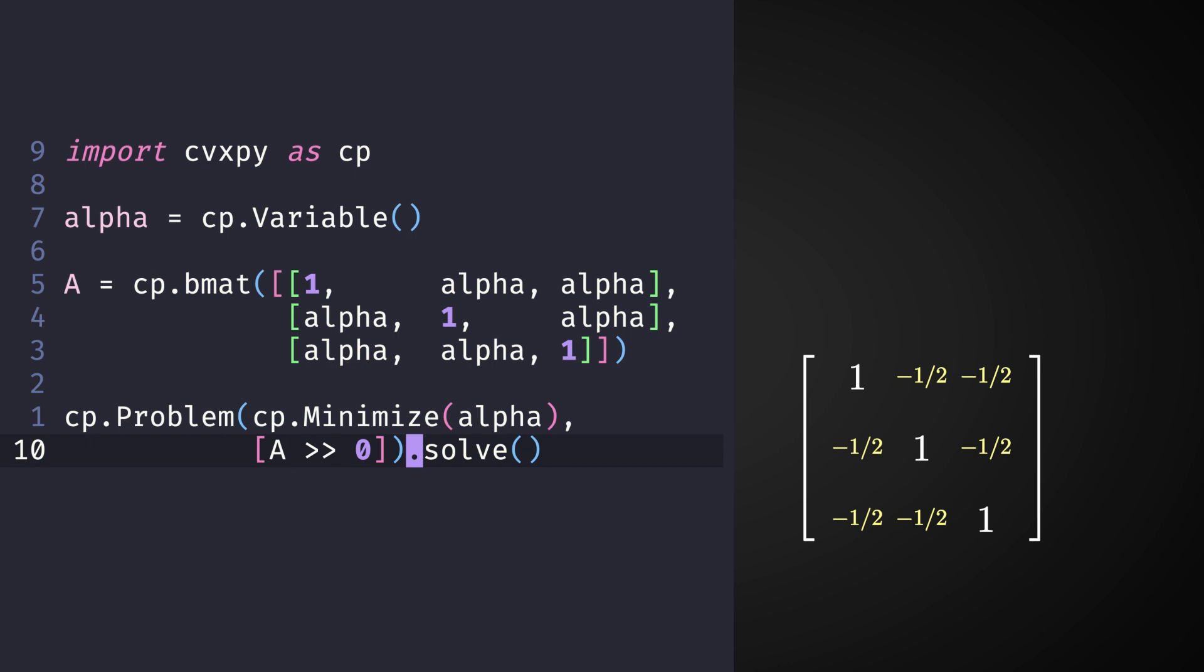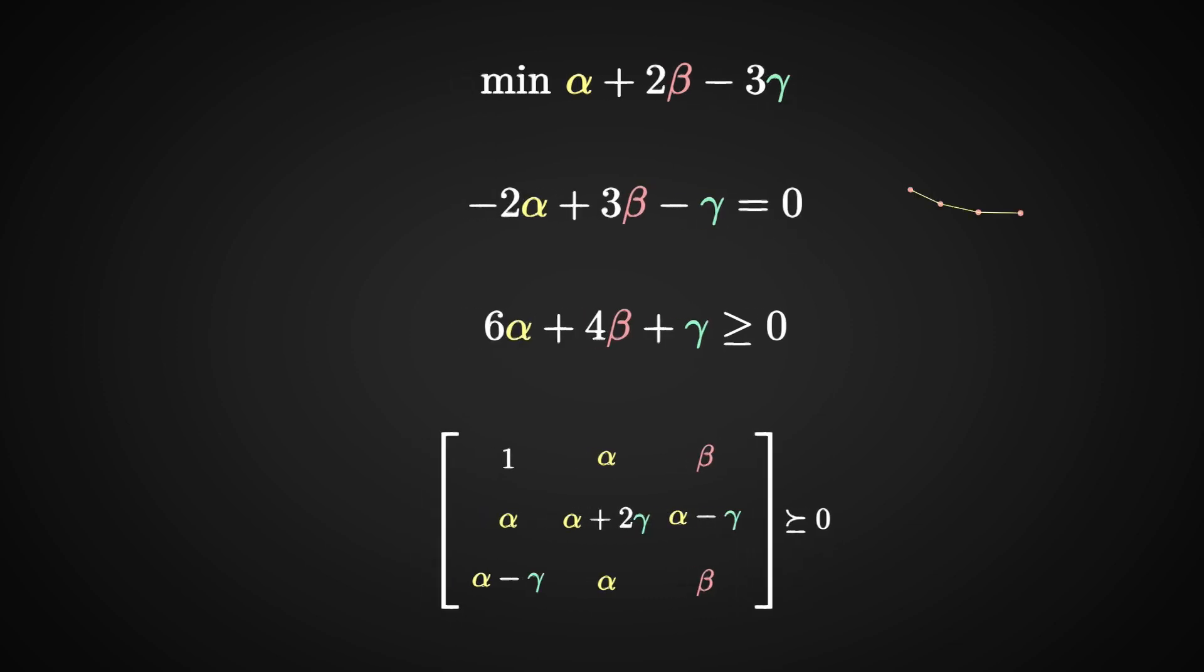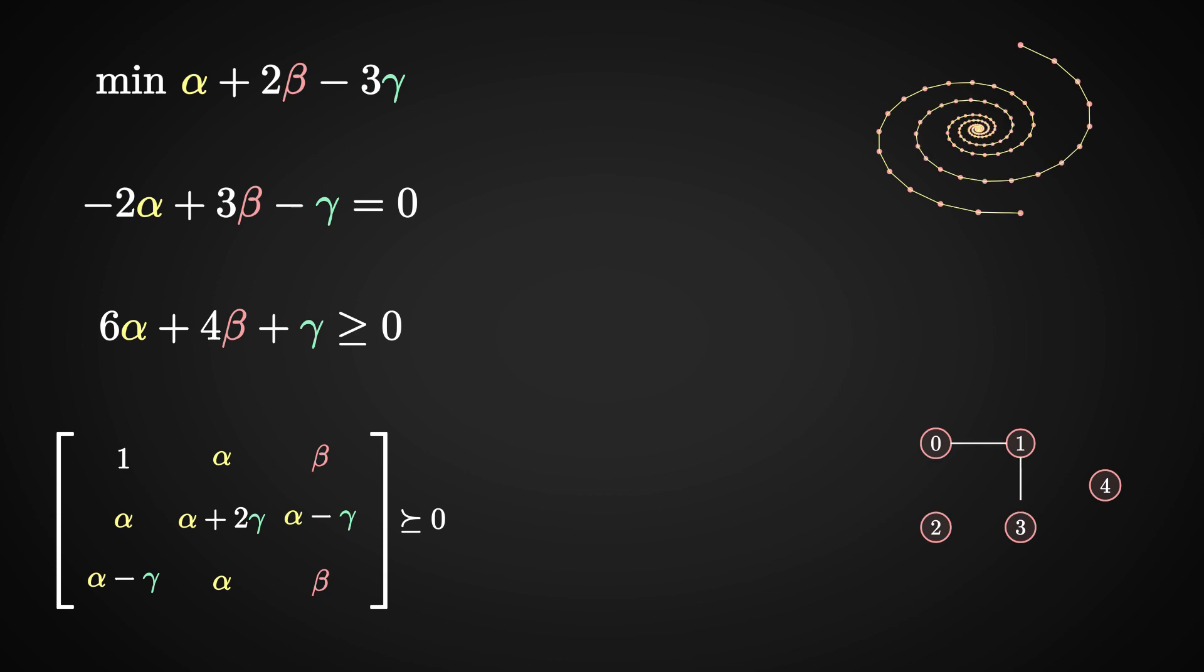And here is the kicker. In semi-definite programming, you are not restricted to single entries as your objective function. You can minimize any linear function of these entries you want. You can also have multiple constraints that are either scalar equalities, scalar inequalities, or matrix inequalities. These capabilities will be extremely useful in the applications that we are going to see in the next video.